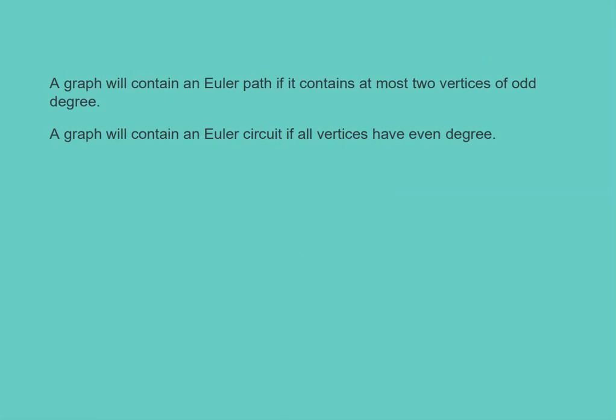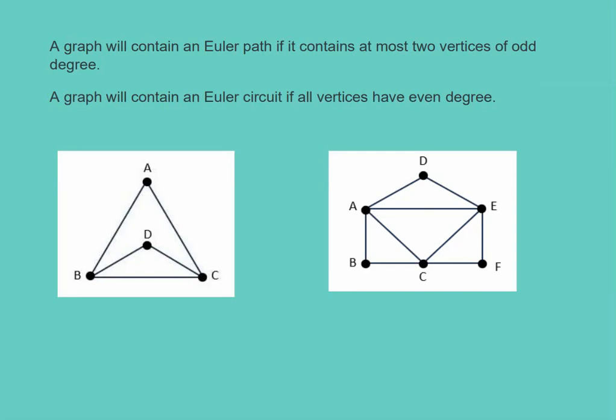When trying to determine if a diagram has an Euler path or an Euler circuit, we can use these theorems. The first theorem says a graph will contain an Euler path if it contains at most two vertices of odd degree. The other theorem says a graph will contain an Euler circuit if all vertices have an even degree. The degree is determined by how many edges are connected to a vertex. For example, in this graph, vertex A has two edges connected to it, so A has a degree of two.